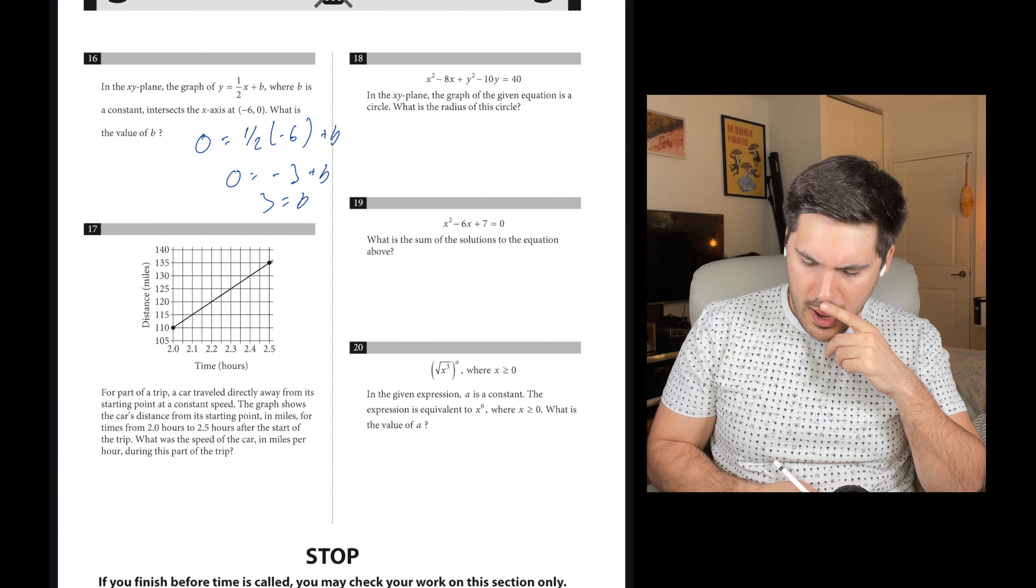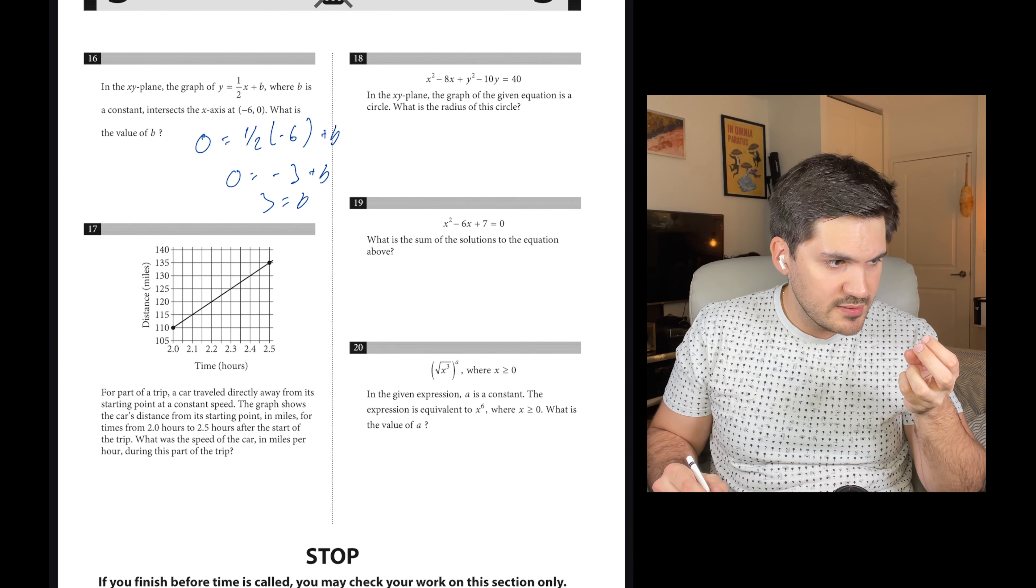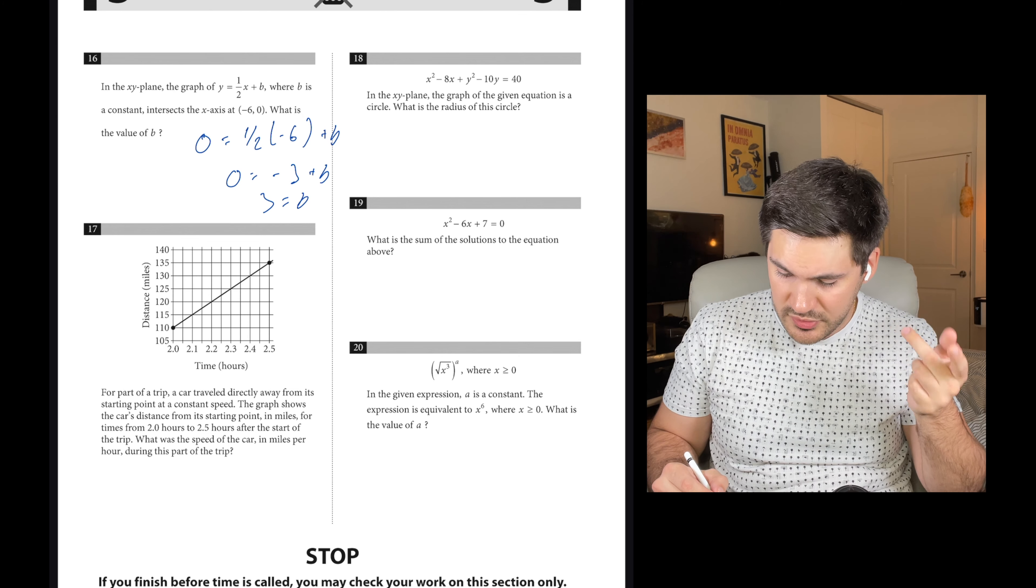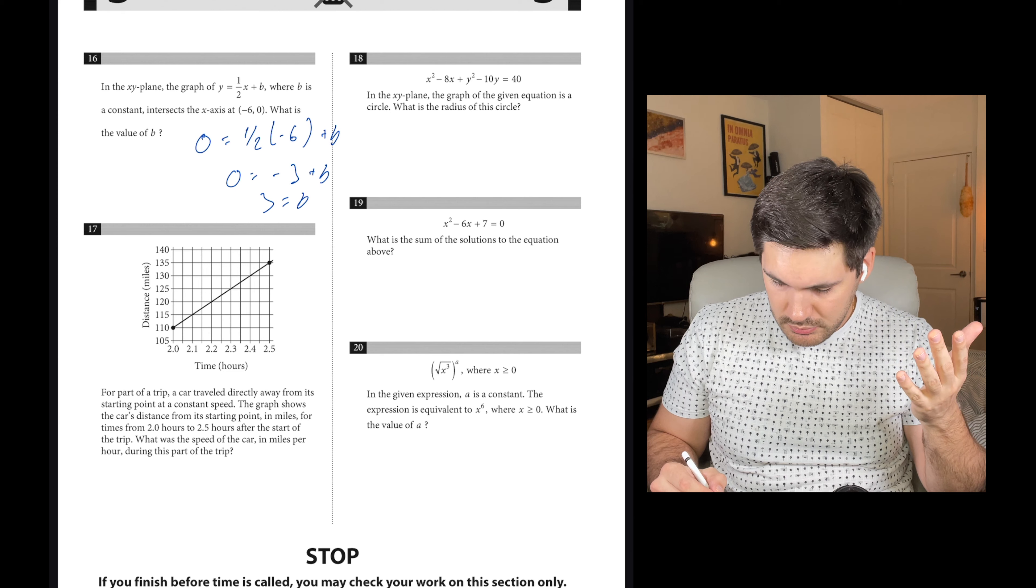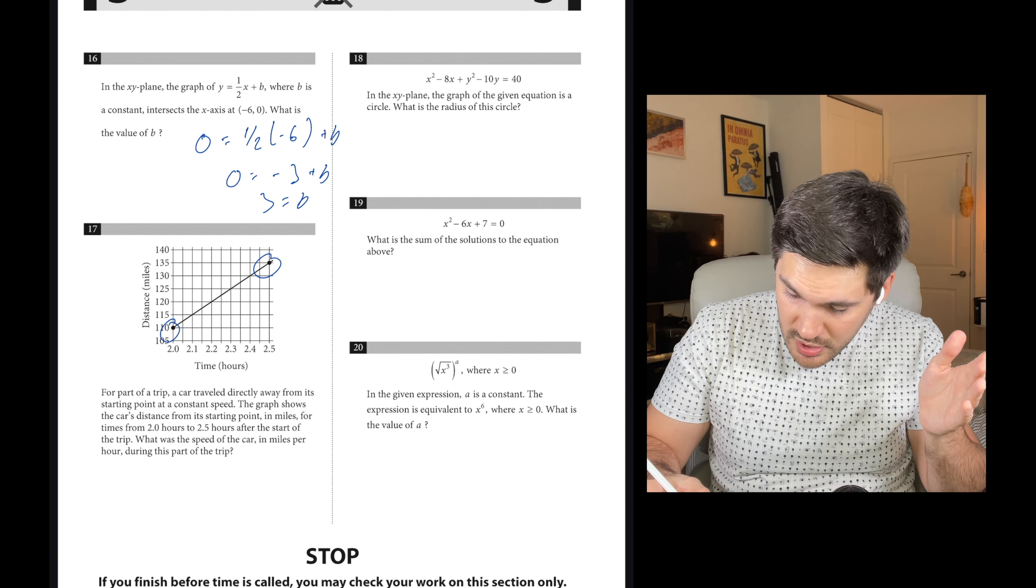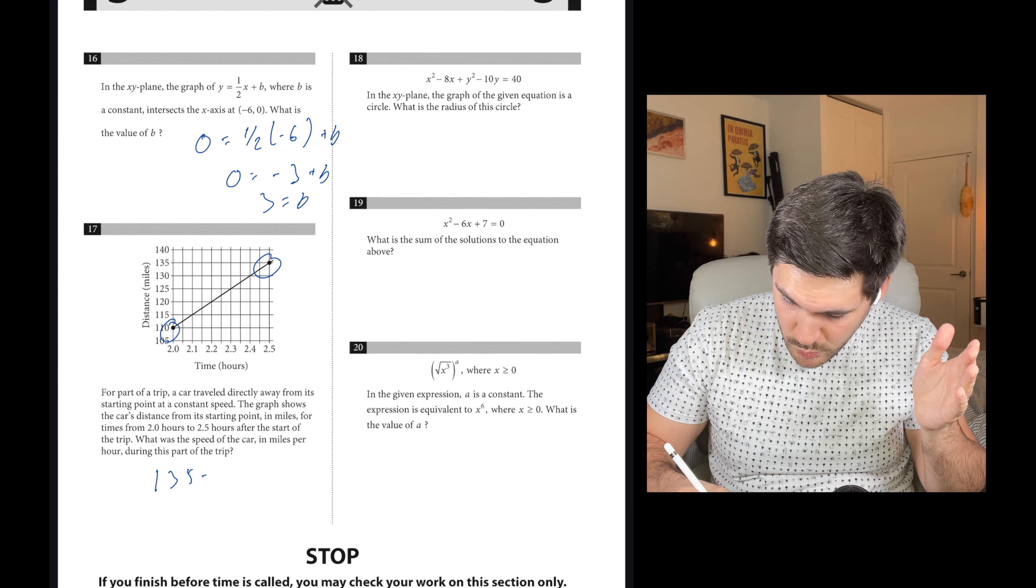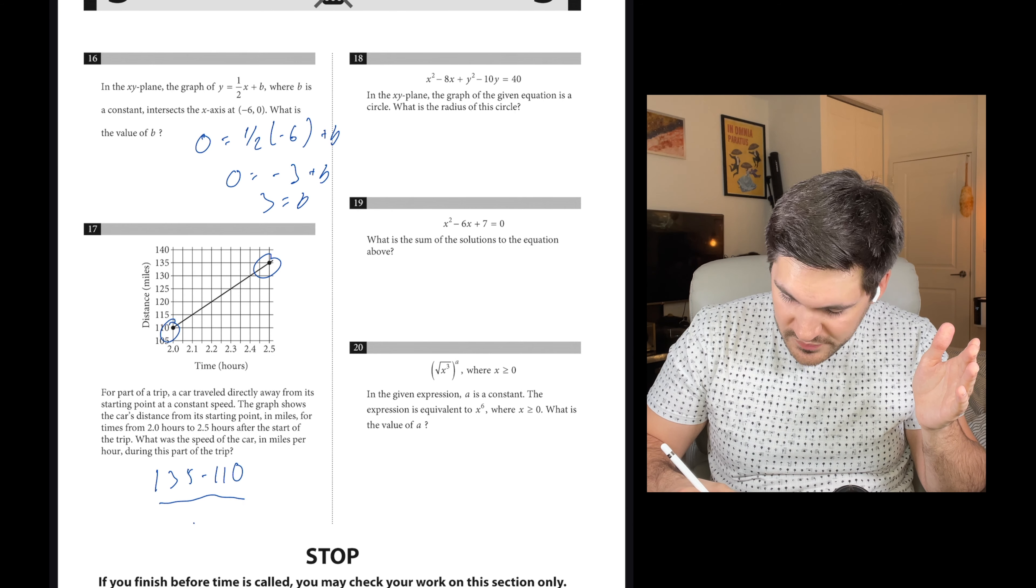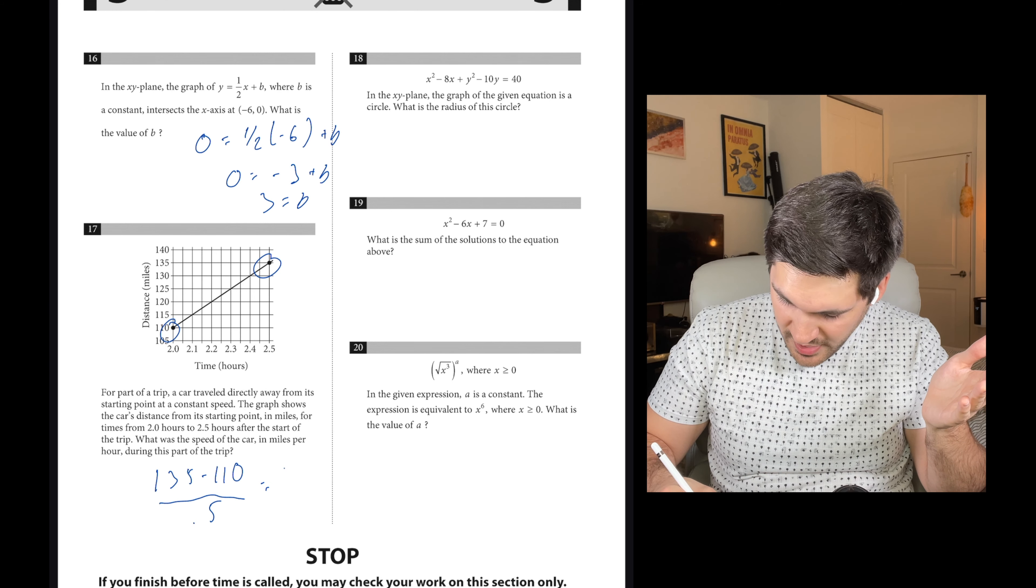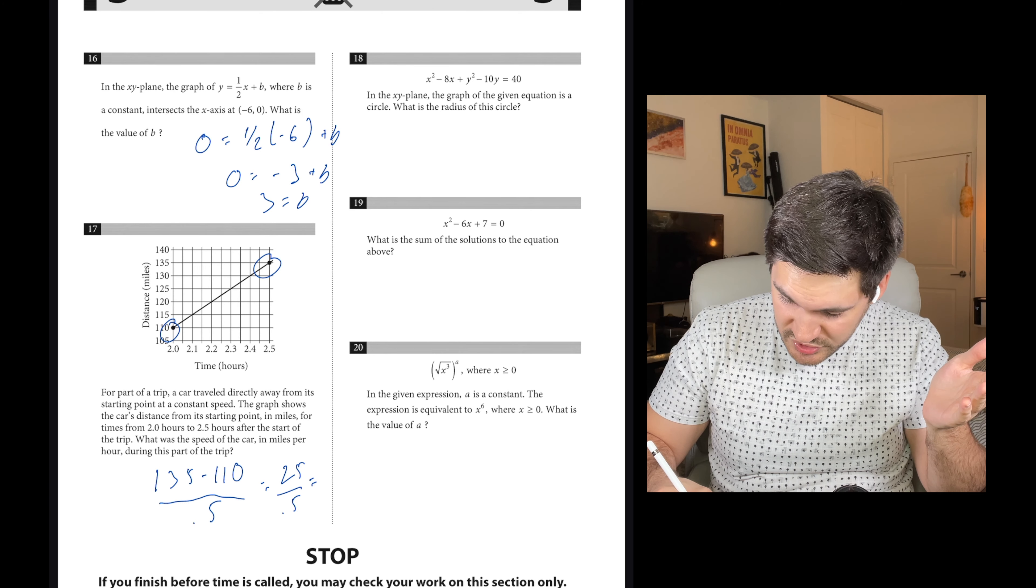Number 17. For part of the trip, a car traveled directly away from a starting point at a constant speed. What was the speed of the car in miles per hour during this part of the trip? Look at where we started and when we finished. We started over here, we finished over here. So we're going to do 135 minus 110 over 0.5 hours. This gives us 25 over 0.5, which is 50.